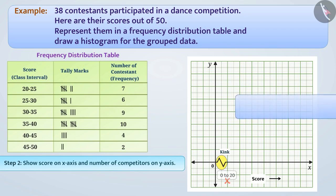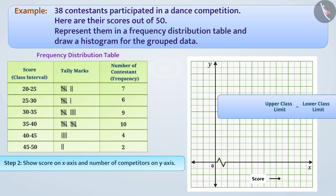Here, the difference in the upper class limit and the lower class limit of each class interval, that is, the width or size of each class interval is same. Therefore, we will mark the class intervals by keeping the same distance on the horizontal axis.